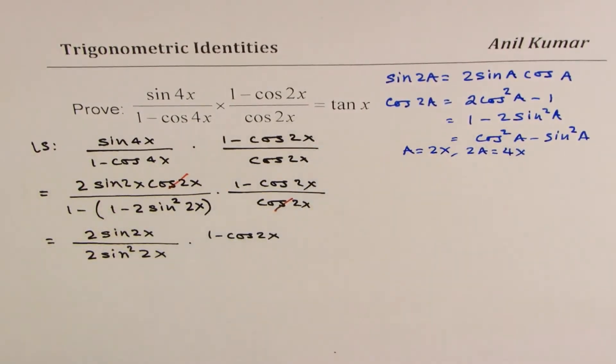We want tan 2x as our result. So in this particular case, what we can do here is sine 2x, sine square 2x, one of them get cancelled, right? So we get sine 2x in the denominator.